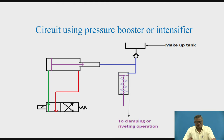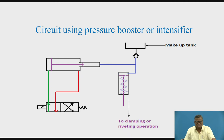Consider the clamping or riveting operation, where the tail of the rivet is to be converted into a head-like structure and plates are to be joined with the help of the rivet. Or think of operations like clamping where very high forces are needed — for example, when a multipoint cutting tool is used like milling, or when a number of surfaces are being machined at a time. In all such cases where high pressure or high force is required, we use intensifiers.